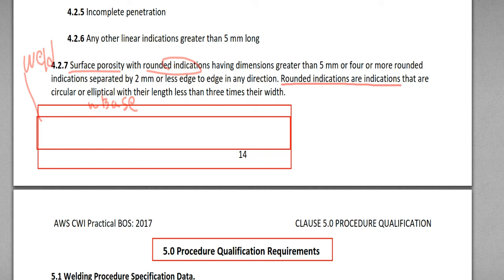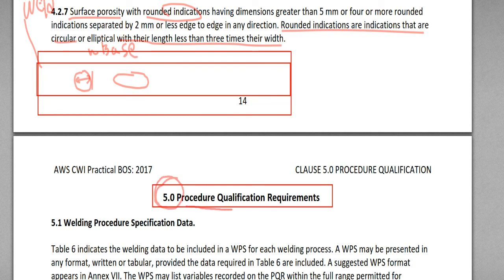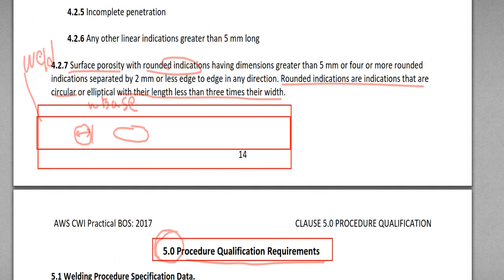This is 4.2.7, and this is the last section of Chapter 4: Workmanship Requirements and Visual Inspection Acceptance Criteria for Pressure Piping. I'm going to stop here today. Next lecture I will give you Chapter 5: Procedure Qualification Requirements — WPS and PQR Qualification. Thank you for listening, and I'll see you next time.